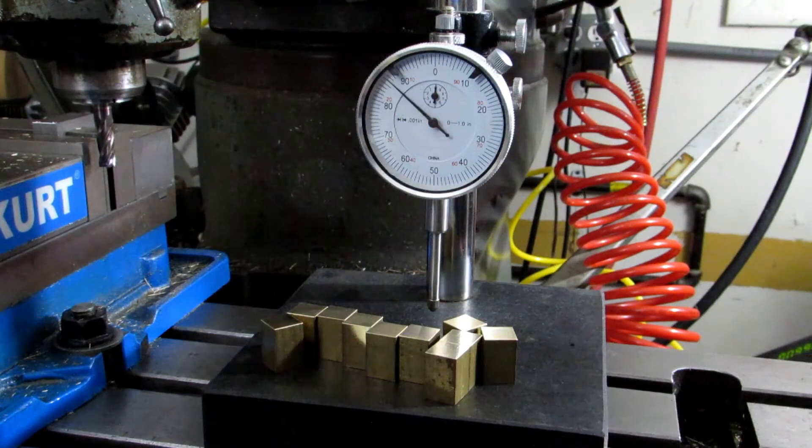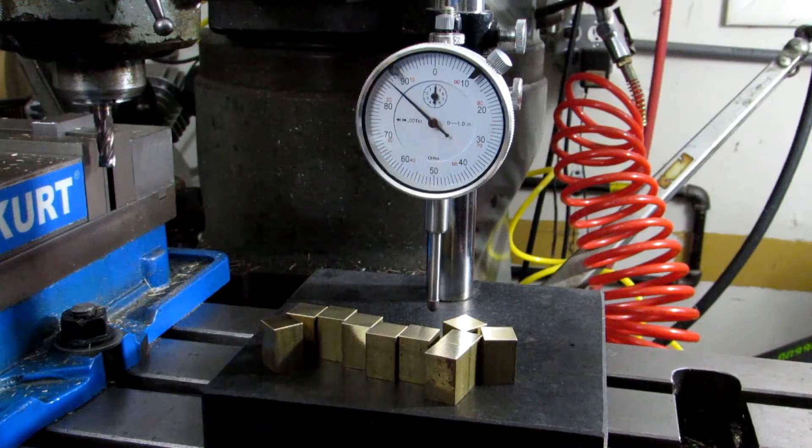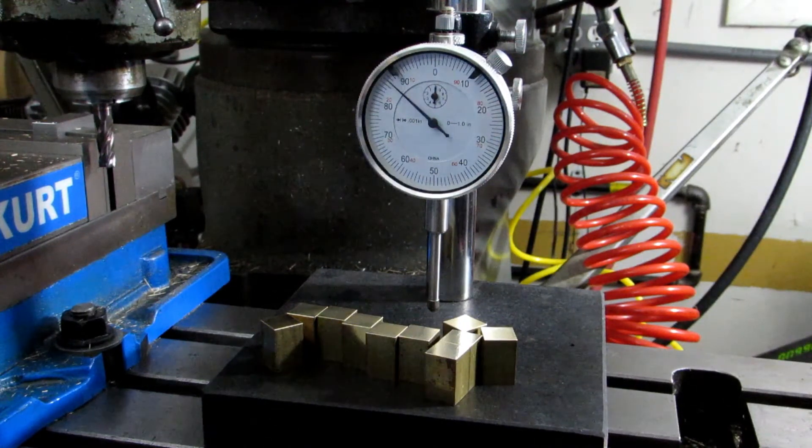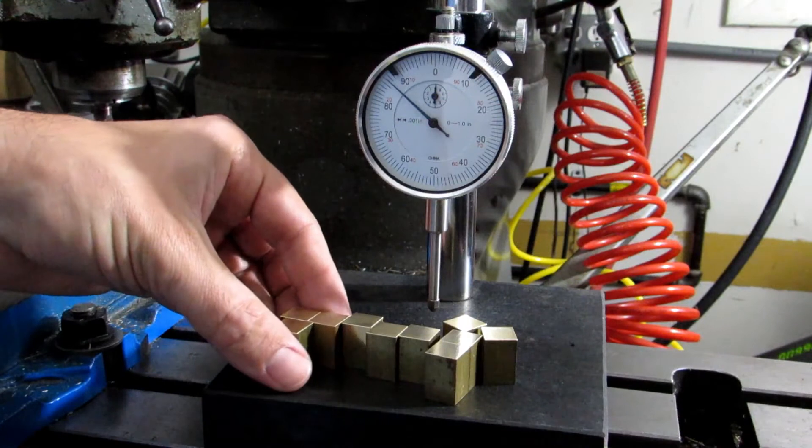And a thousandth under. So real fast, I just slid those all under the indicator and I immediately could tell if my parts were in tolerance or out of tolerance. In this case, just with my vice stop, I got all of these within a thousandth of an inch.